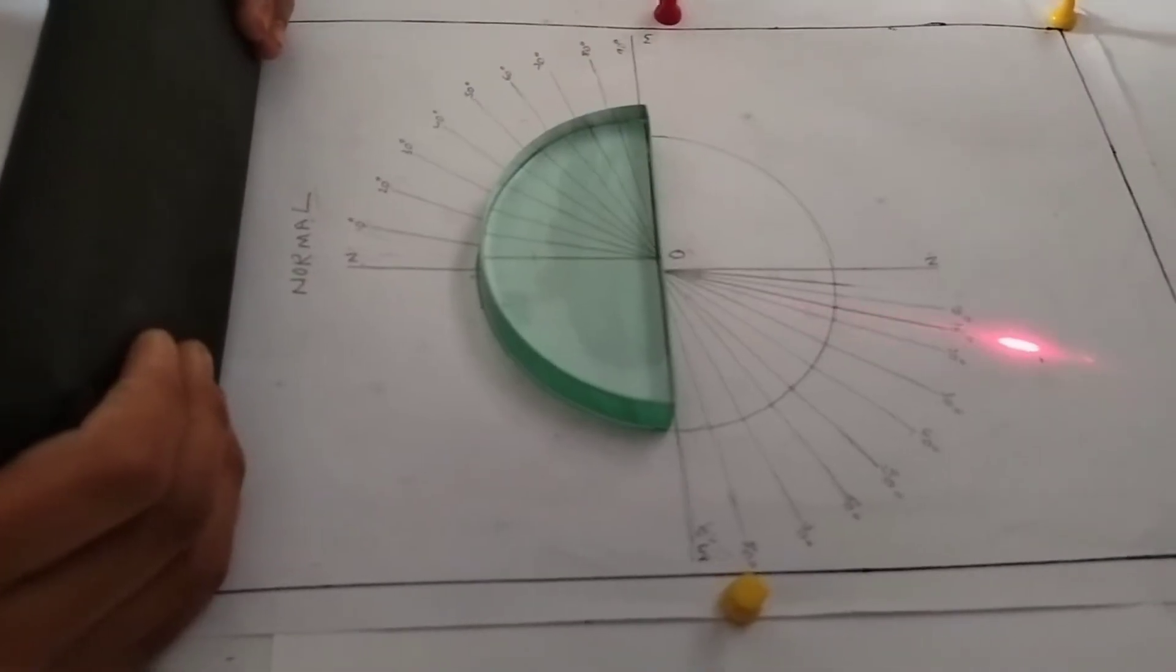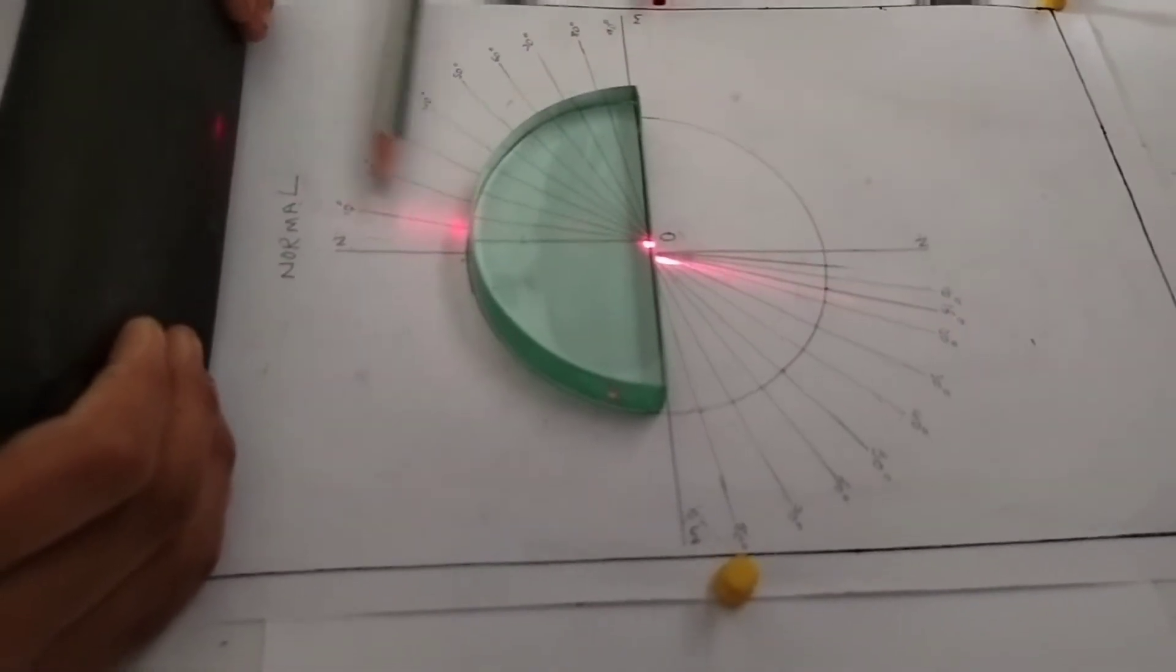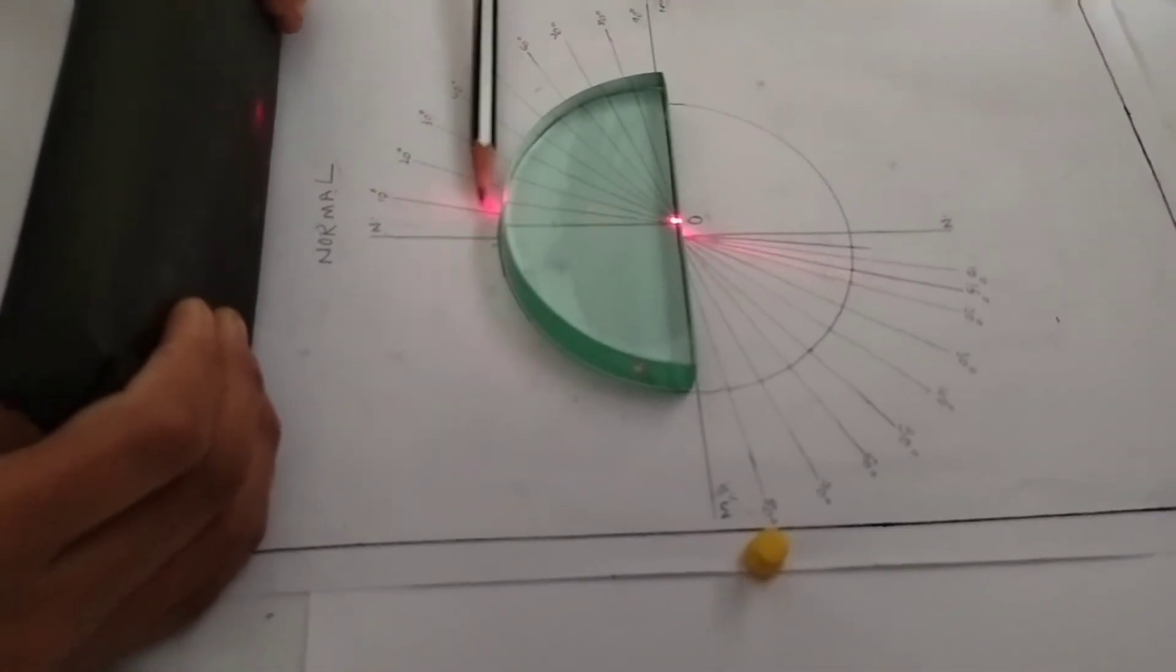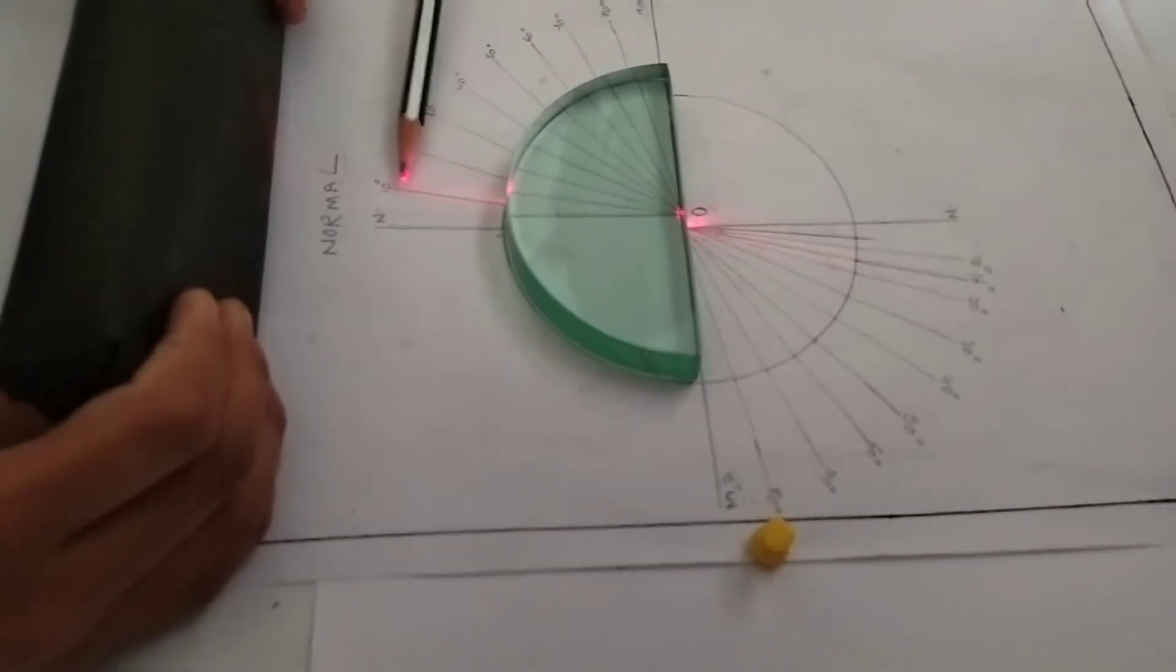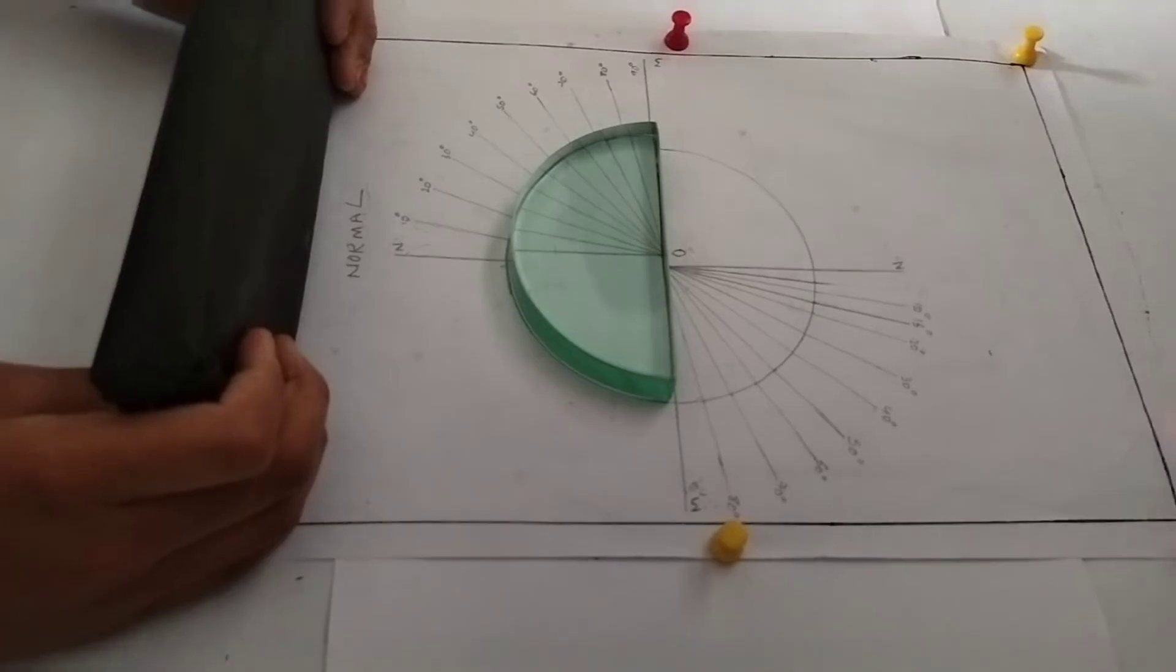Send laser light along a line which makes a 15-degree angle of incidence with NN and see that it must pass through the point O. Measure its corresponding angle of refraction.